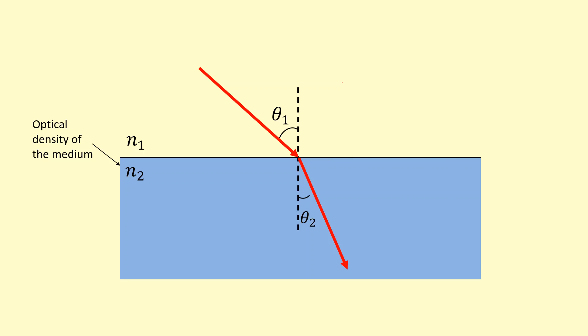But this isn't the only thing that affects the refractive index. The wavelength of the light also affects the refractive index. So it turns out shorter wavelength light, for example violet, actually slows down more than red in a more optically dense medium. So they bend towards the normal more.